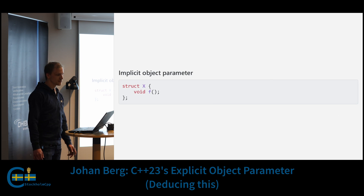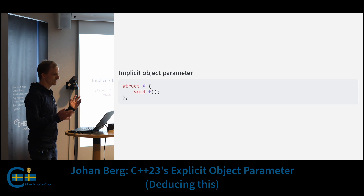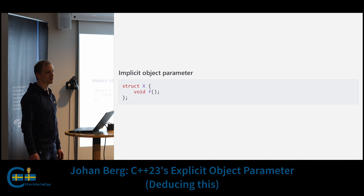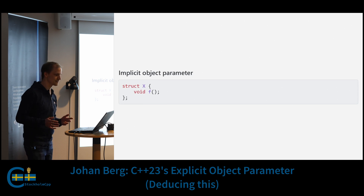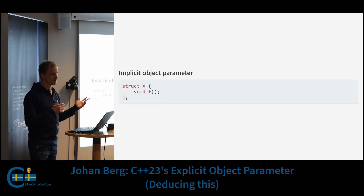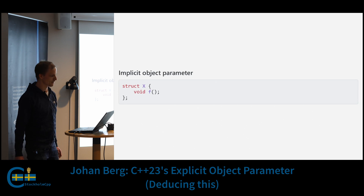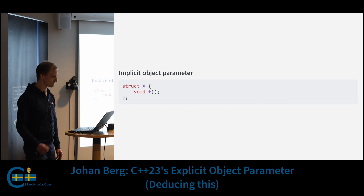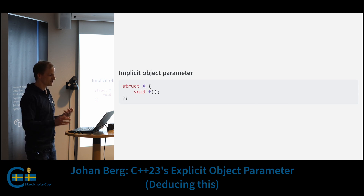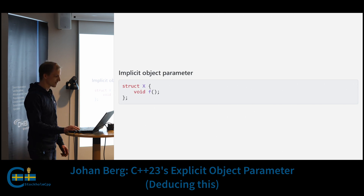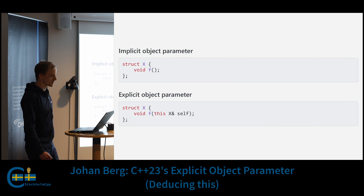We start with a simple non-static member function. The function f here takes no parameters, but as you probably know it actually has a hidden first parameter — an implicit object parameter — and we can access it through the 'this' pointer inside the function body. This new feature gives us a way to make this parameter explicit and to be able to give it a name.